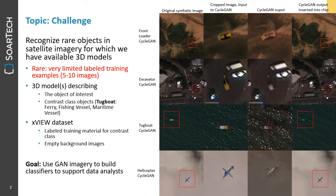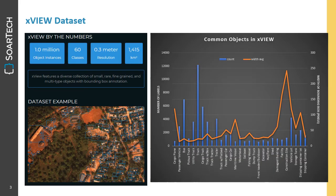We'll also be depending upon the XView dataset to provide labeled training material for contrast classes and empty background images. The XView dataset was released in 2018 and contains annotated imagery for 60 different classes of objects at 0.3 meter resolution. Common objects found in XView include things like cargo planes, passenger vehicles, buses, etc.